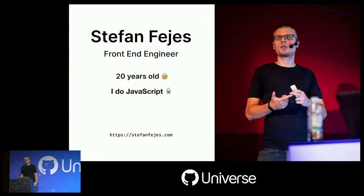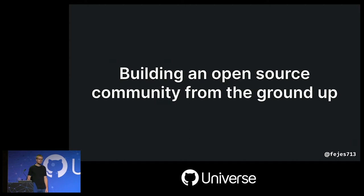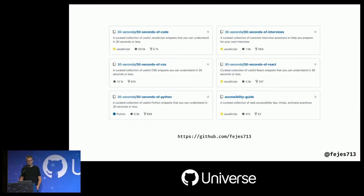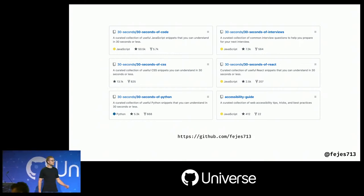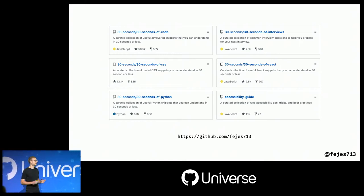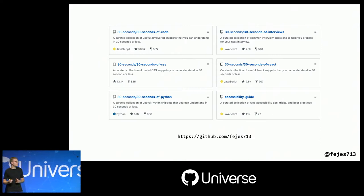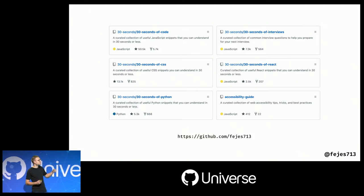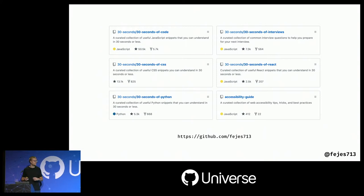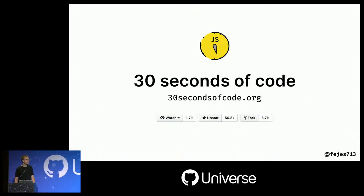The reason why I'm here today is to talk about open source — specifically about building an open source community from the ground up. Here are some projects I've done in the previous two years since I started my coding journey. The most popular one is called Thirty Seconds of Code, and today we're going to learn from our mistakes and hear tips on how we managed to grow it from zero to more than 51,000 GitHub stars.